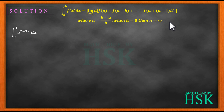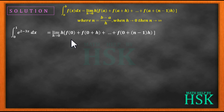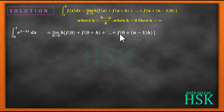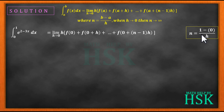To solve this integral as a limit of a sum, we will apply this formula. Because the lower limit is 0, I can write the integral of e to the power of 2 minus 3x dx from 0 to 1 as equal to limit of h tending to 0 of h into f(0) plus f(0+h) plus so on up to f(0+(n-1)h).